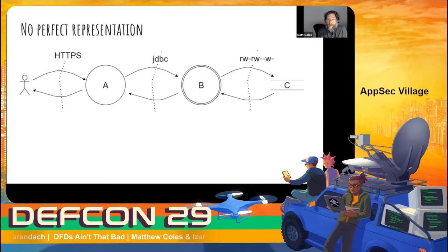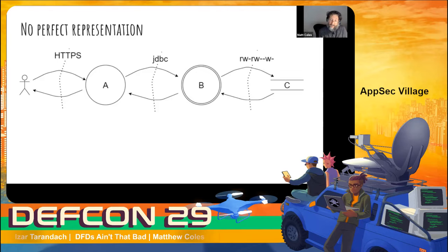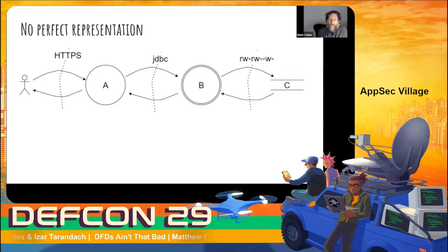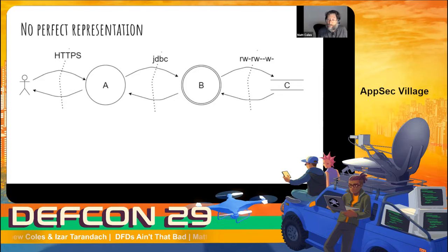The next few slides all describe the same system in different ways, yet they're all valuable from the modeling and elicitation standpoint. Here we have a DFD model: a data flow diagram describing a system where a user talks to server A, server A talks to server B, server B talks to a data store — over HTTPS, JDBC, and local file access. Right off the bat you're probably noticing things valuable if you're looking for threats. We've encoded enough information into the model that you know you have two processes, a data store, a user, and some communication channels.